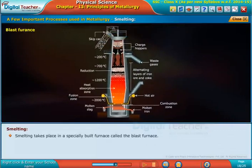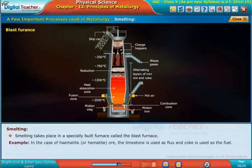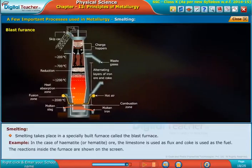Smelting takes place in a specially built furnace called the blast furnace. For example, in the case of hematite ore, limestone is used as flux and coke is used as fuel. The reactions inside the furnace are shown on the screen.